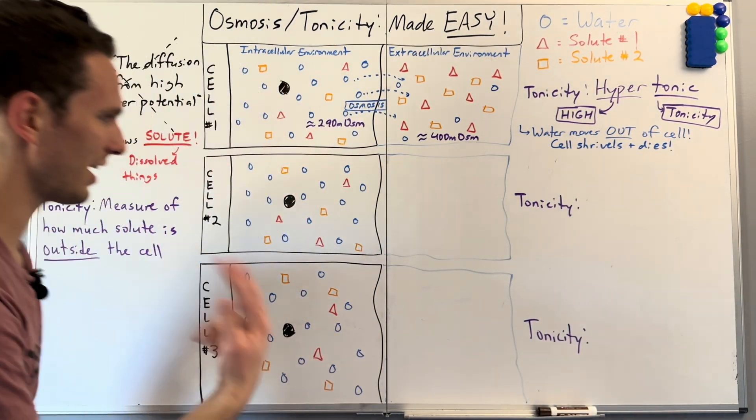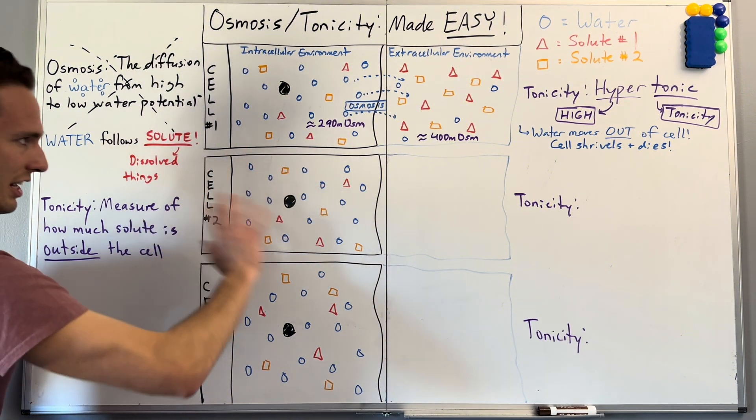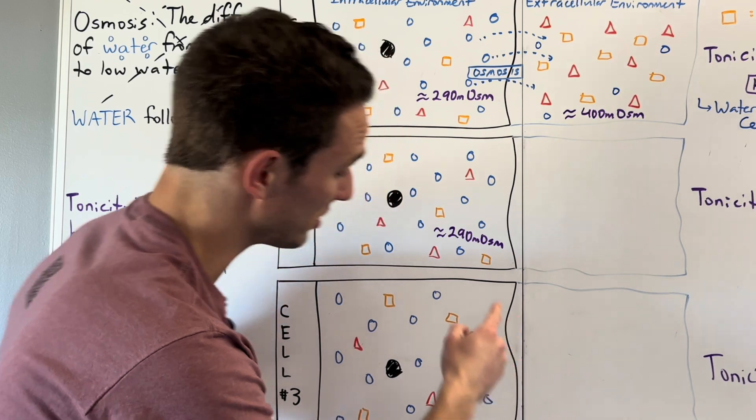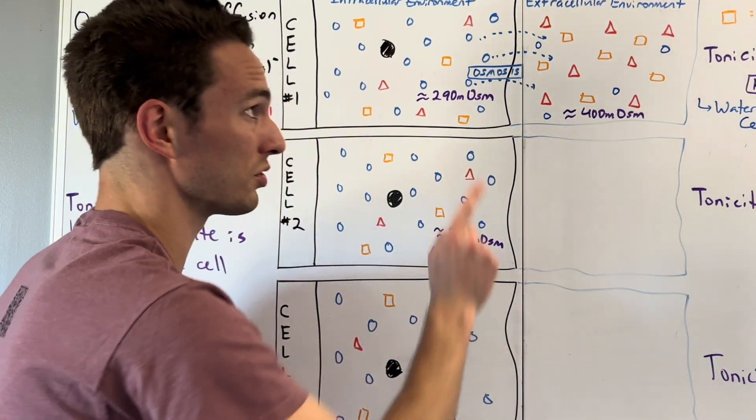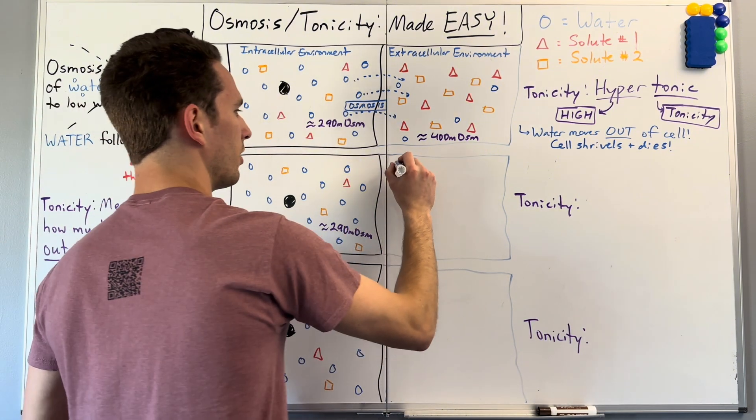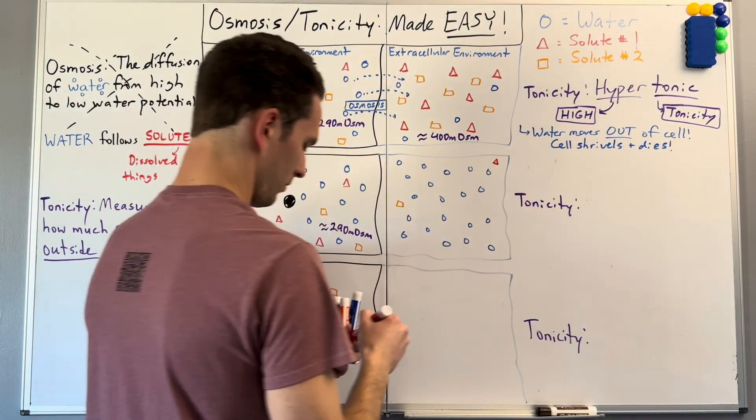Now let's take the second example. So in this case, we're going to have the same exact solute concentration inside the cell, which, fun fact, is a homeostatic variable. You can actually learn about homeostasis in this video next. But in this case, I'm going to draw a different tonicity outside of the cell.